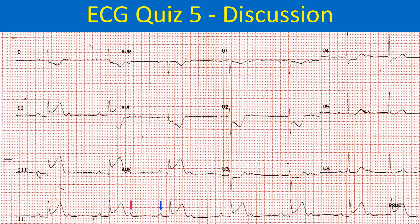As the QRS complex is narrow, it is likely to be a suprahisian block at the AV nodal level rather than an infrahisian block. Moreover, the ECG shows features of hyperacute inferior wall myocardial infarction, which is associated with AV nodal block and not infrahisian block.